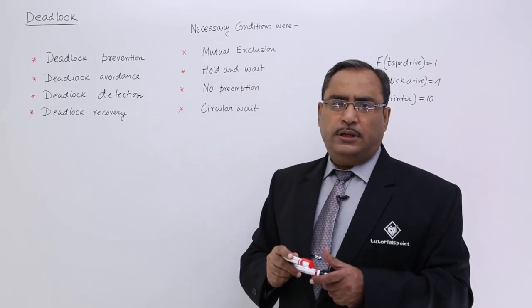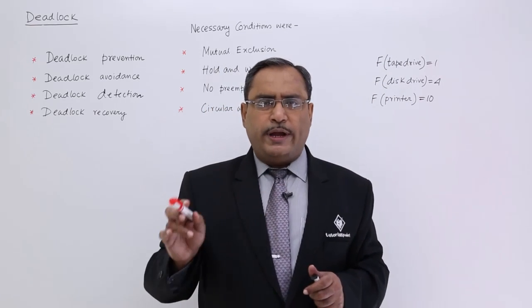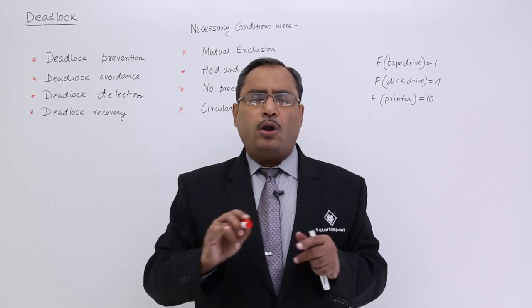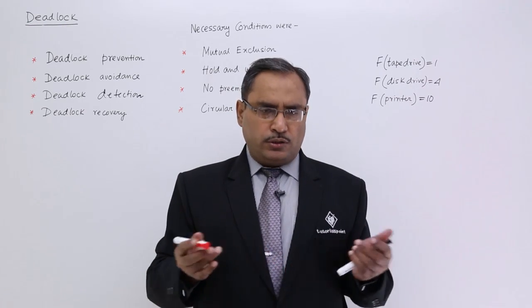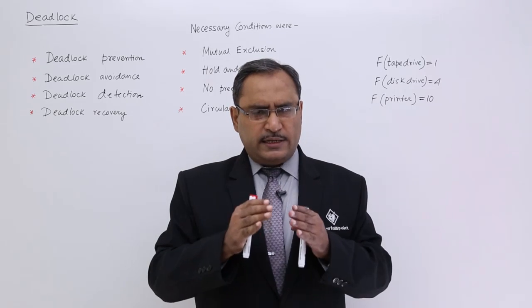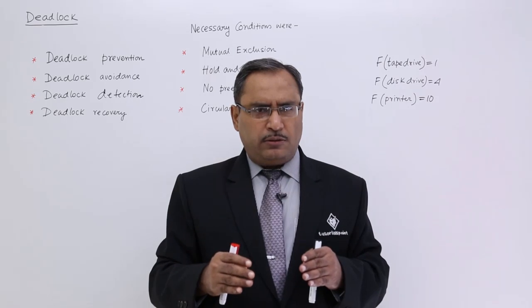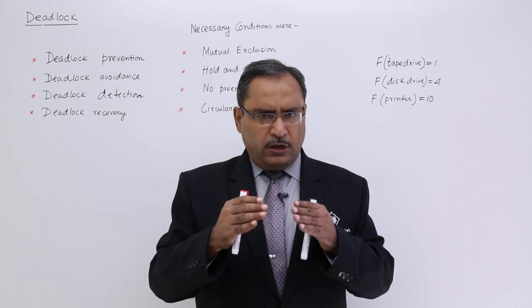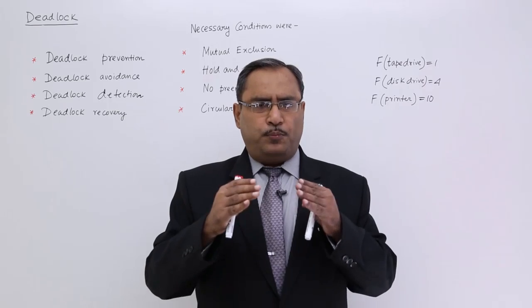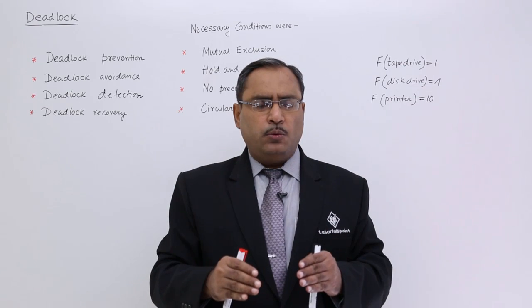So what about mutual exclusion? The solution is: please categorize all resources under two heads — shareable or non-shareable. Do not make all of them non-shareable. When resources become shareable, multiple processes and threads can access that particular resource and go in parallel and concurrently. So the probability of occurrence of deadlock will get reduced.